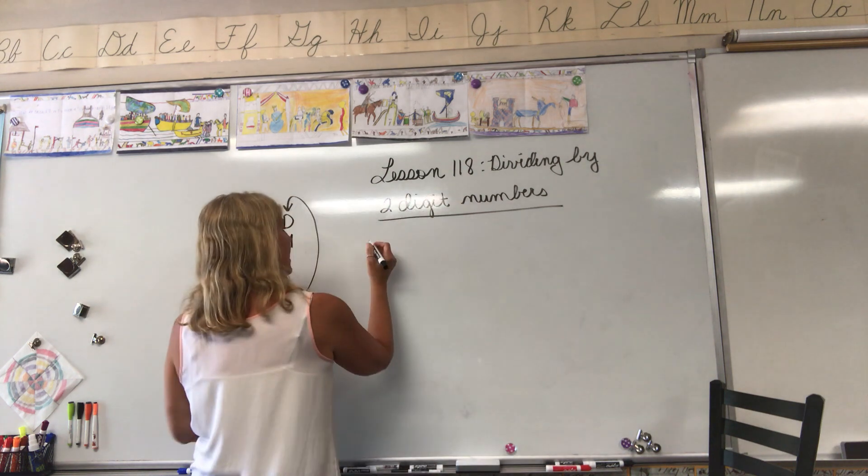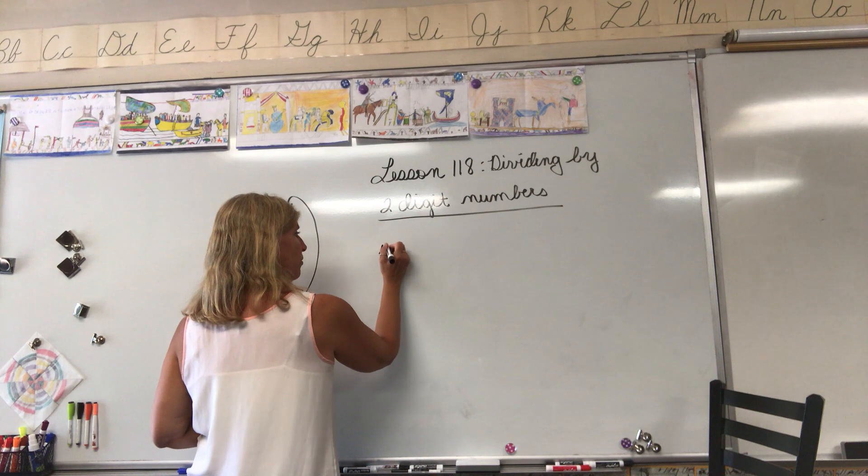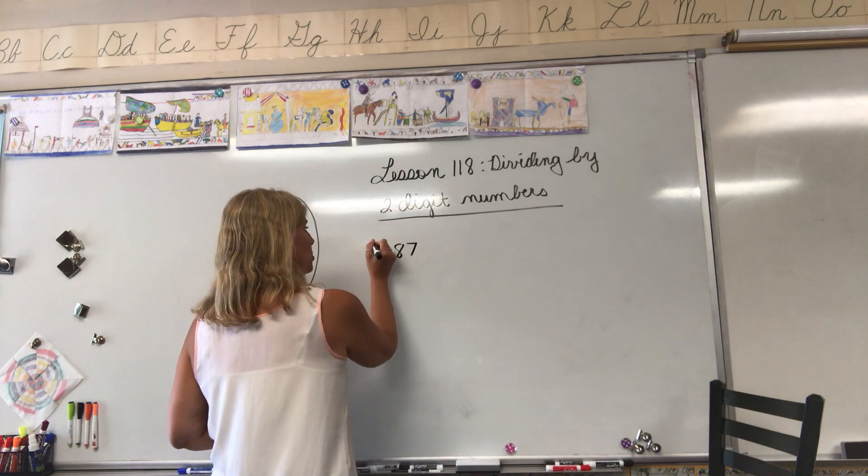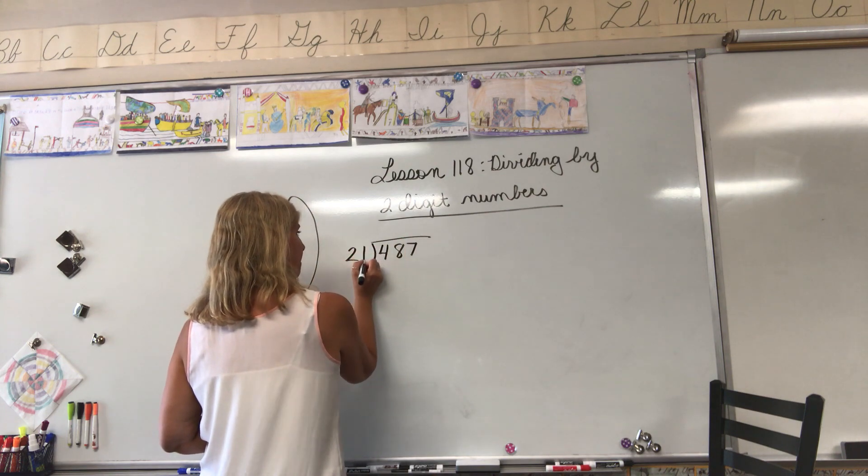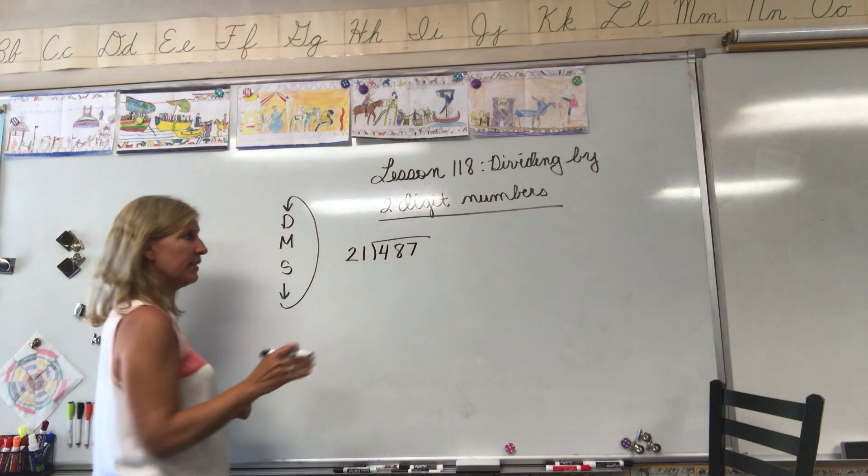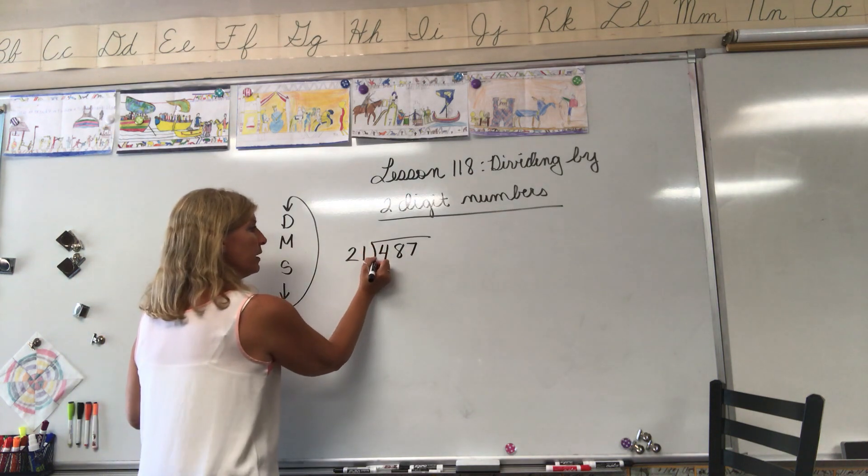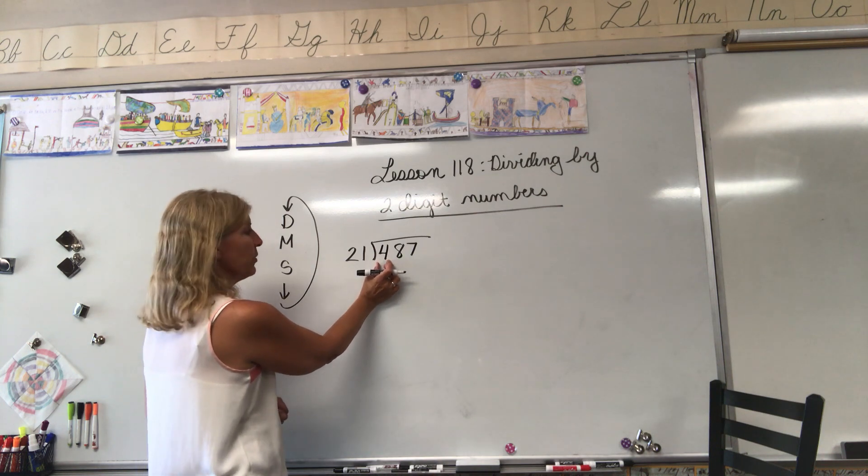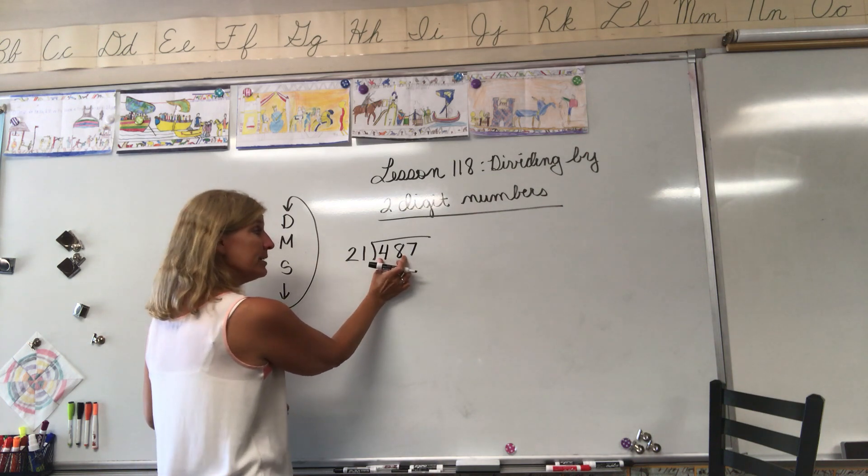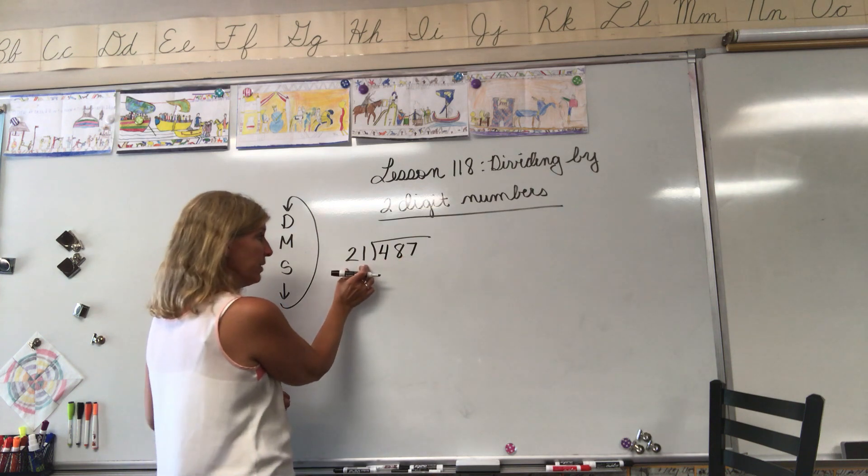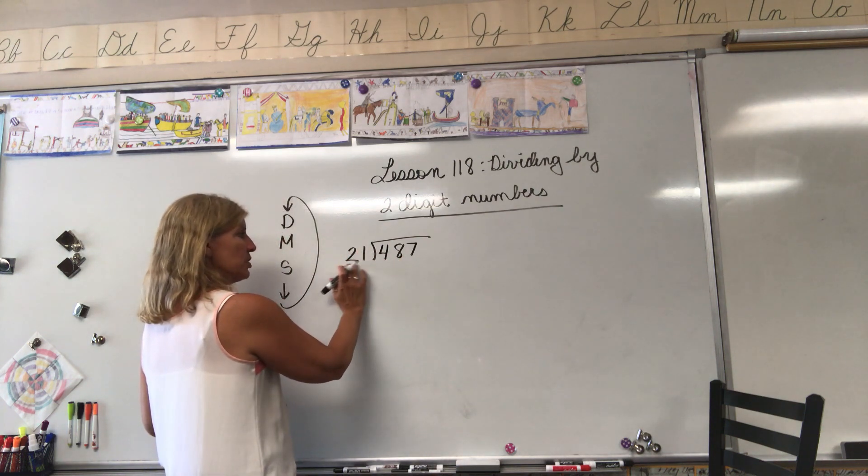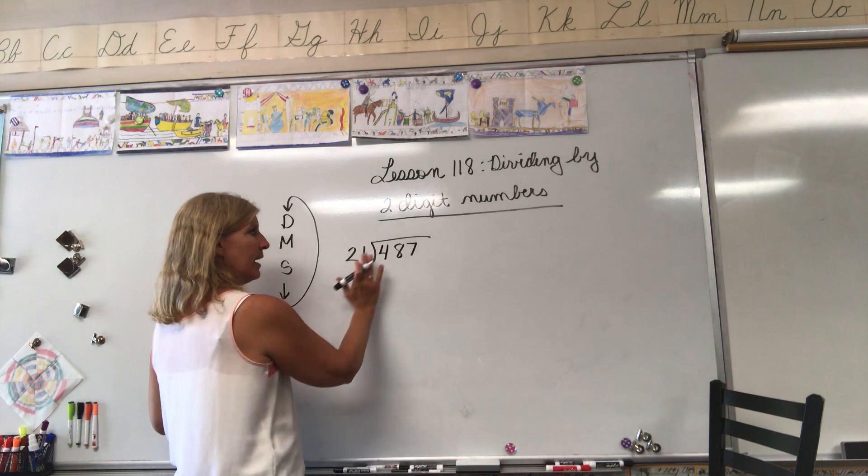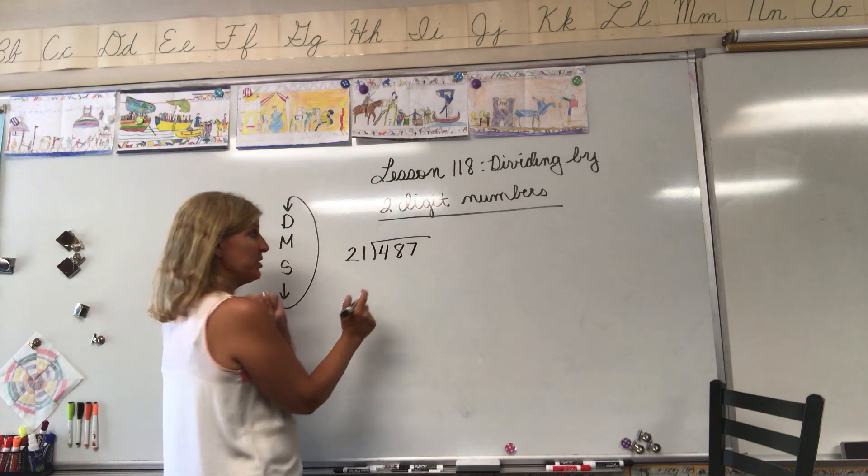Let's try the next example, example three in your book. Again we're on page 546 if you're choosing to follow along in your book. Next we're going to divide 487 by the number 21. All right, 487 divided by 21. 21, does it go into 4? No, 4 is smaller than 21. Does 21 go into 48? Yes, 48 is bigger than 21.